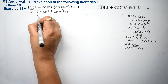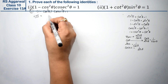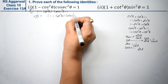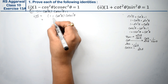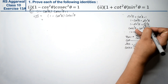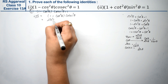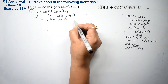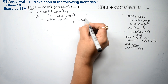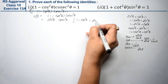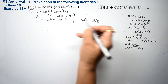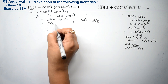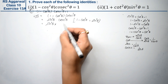Now let's take the left-hand side. Left-hand side is: 1 minus cos squared theta, times csc squared theta. Now, 1 minus cos squared theta — what can we write? We write sin squared theta. So I have written sin squared theta into csc squared theta. Why? Because 1 minus cos squared theta equals sin squared theta. You have to write this identity on the side.